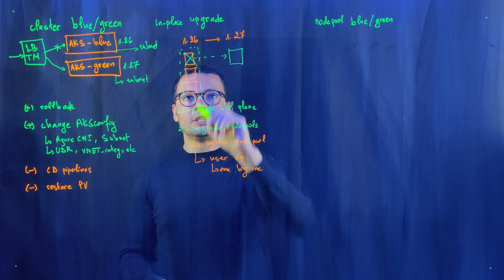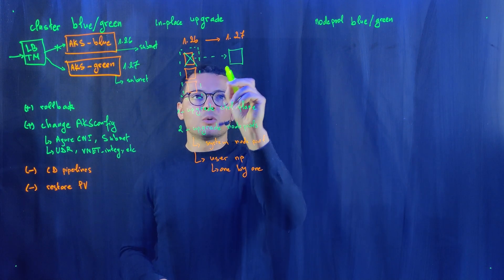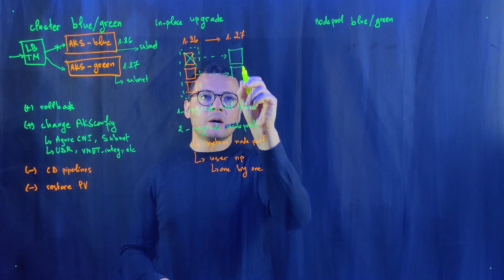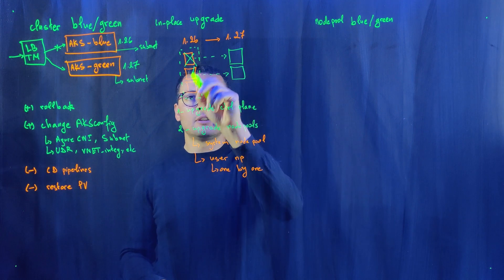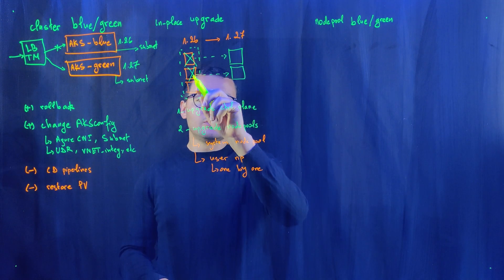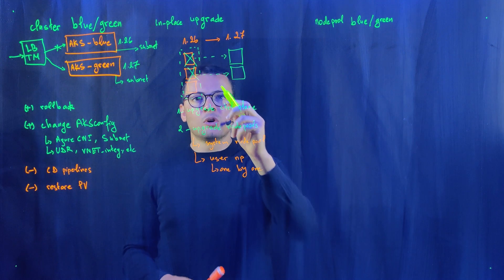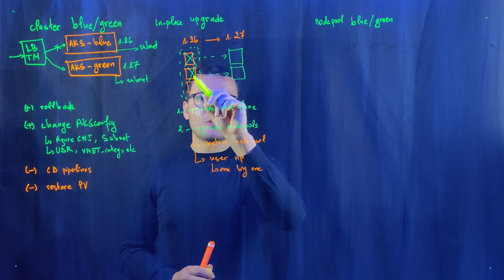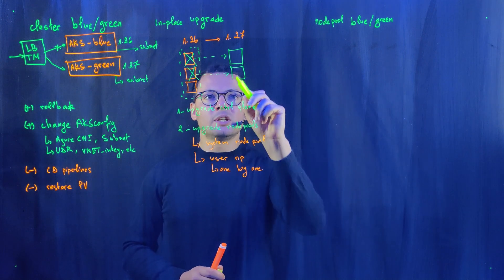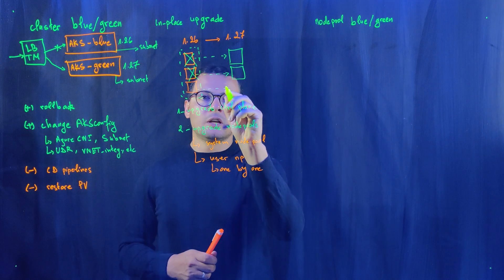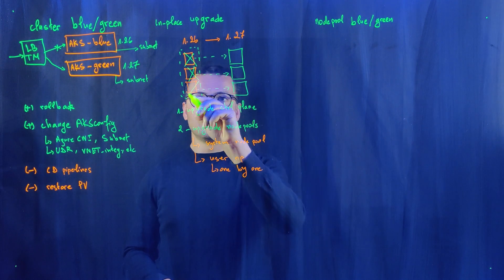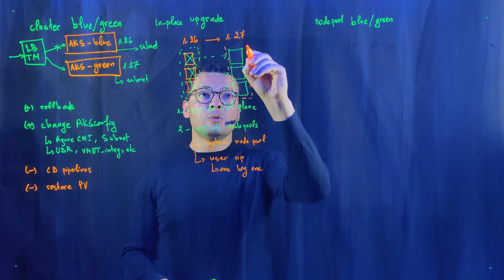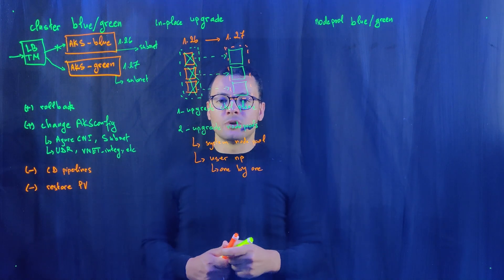AKS will delete that VM once the upgrade is successful, then move to the second VM, upgrade it to 1.27, and remove it. When it removes the VM, it will also cordon and drain that VM, meaning the pods will be rescheduled onto the new VM. It finishes with the last VM, and at the end you have the same node pool but with a newer Kubernetes version.